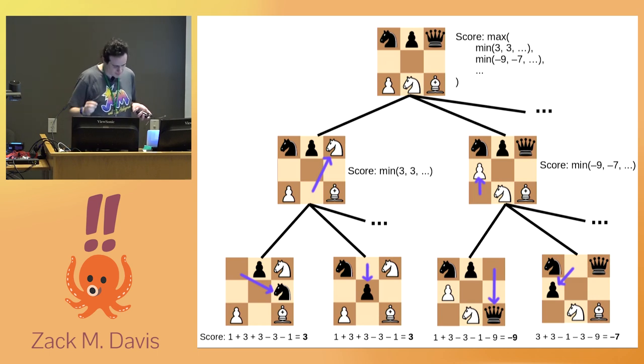Now the problem with that is it's short-sighted. If capturing the opponent's queen would just result in the opponent capturing the first player's queen back, then what looked like a nine-point game after one turn ends up being a wash after both players have taken their turn.